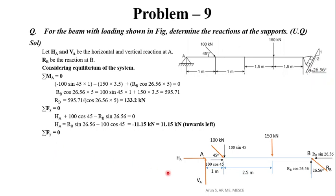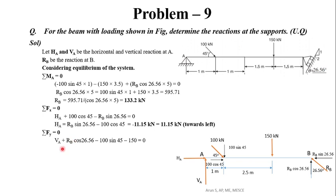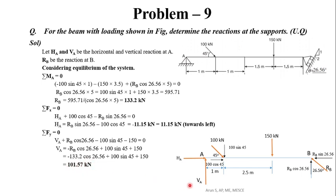Applying Sigma Fy = 0: VA plus RB cos 26.56 minus 100 sin 45 minus 150 = 0. Taking upward forces as positive: RB cos 26.56 is upward (positive), while 100 sin 45 and 150 kN are downward (negative). Substituting RB = 133.2 kN, we get VA = −RB cos 26.56 + 100 sin 45 + 150 = 101.57 kN.